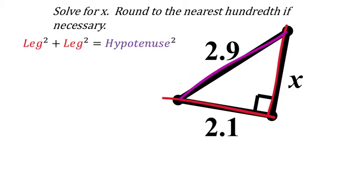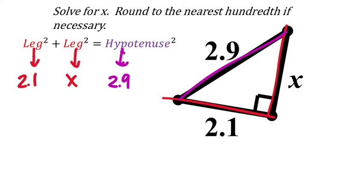We do have one of the legs — it's 2.1. We have the other leg, which we don't know; it's X. And the hypotenuse is 2.9. We're going to go in, take all the values, square them, and take the legs and add those together. That should equal the hypotenuse squared as well.